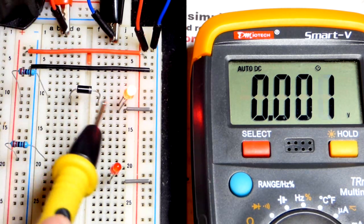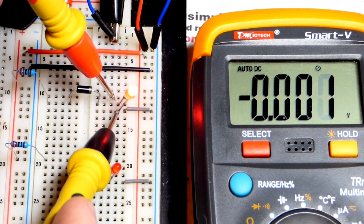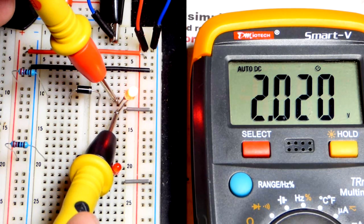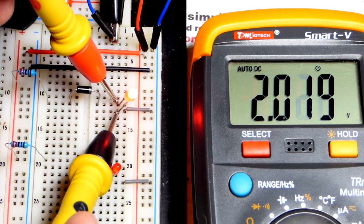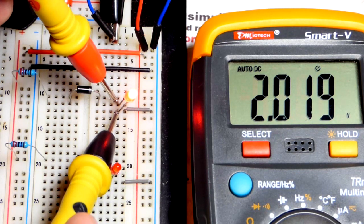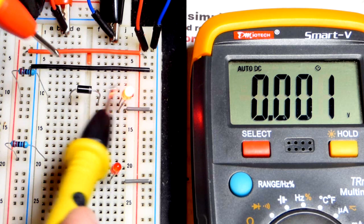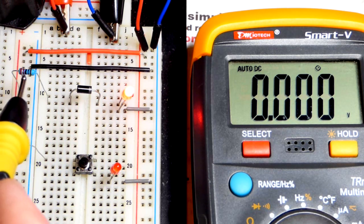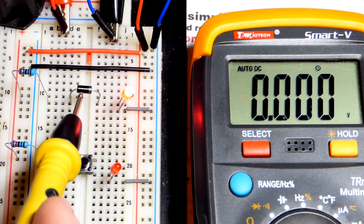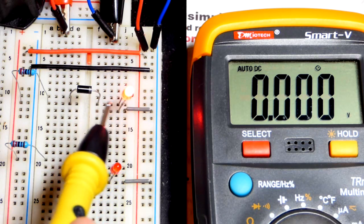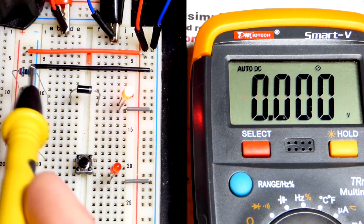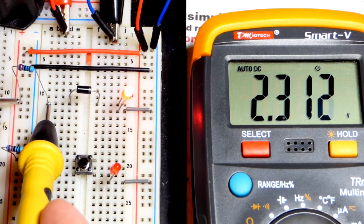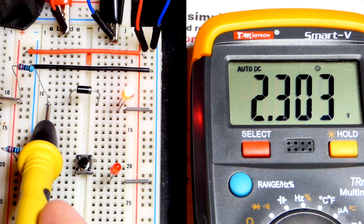So when they're forward biased, they block a certain amount of voltage, but once they reach that voltage, they start conducting current and the voltage goes down. So we got about 2 there, about 0.7 there. And so we expect about 2.2 there because we got 2 plus 0.7 slightly higher. So 2.8. That leaves 2.2 left. And so it's going to be about that. So right there, 2.3. So close enough.